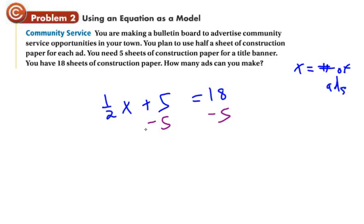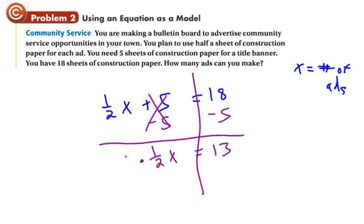So subtract 5 from both sides. That's the addition or subtraction first. One half x is left on this side. Equal to 13. Now, you can divide both sides by one half, but that's the same thing as multiplying by the reciprocal. So I'm just going to multiply by the reciprocal. I know you've learned this. Dividing by a fraction is the same as multiplying by its reciprocal. And that does cancel these out. So you just have x left over here. Then you have to multiply this one by the reciprocal as well, by 2 or 2 over 1. And you get 13 times 2 is 26. It means you can make 26 ads.